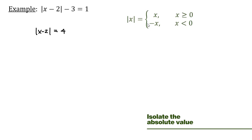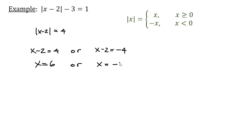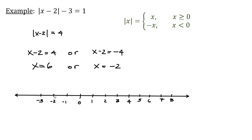Now from the definition, what I have inside the absolute value: if that is positive, then that equals positive 4, or if this is negative, then that's going to equal negative 4. The answer here is x equals negative 2 and x equals positive 6. This is a distance of 4 away, and this is also a distance of 4. So that's x minus 2.